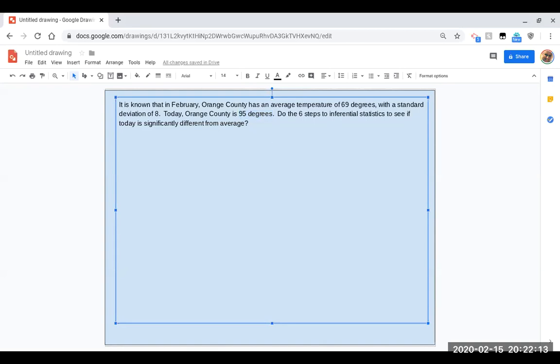So it is known that in February, Orange County has an average temperature of 69 degrees with a standard deviation of 8. Today in Orange County, it is 95 degrees. Do the six steps to inferential statistics to see if today is significantly different from average.